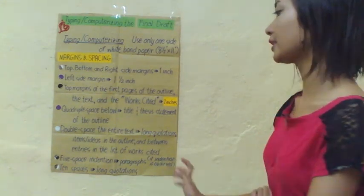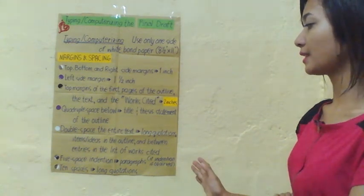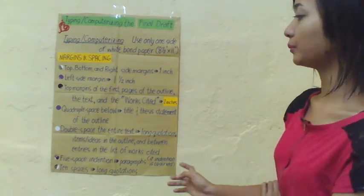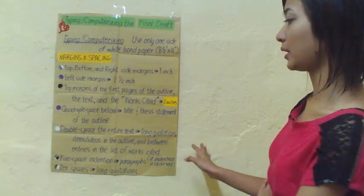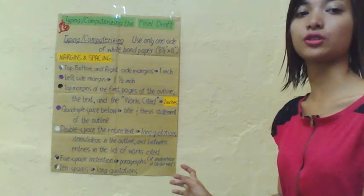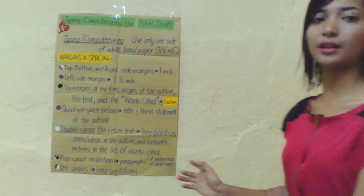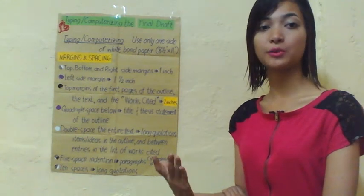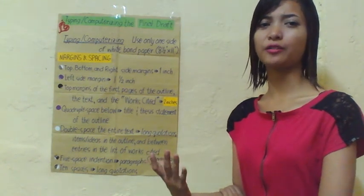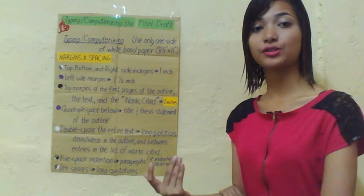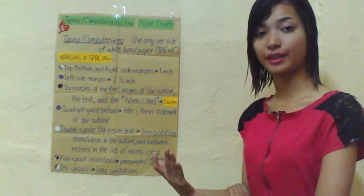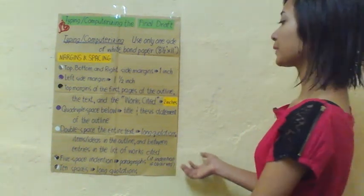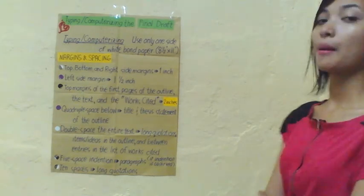Double spacing applies to long quotations, items, and ideas in the outline, and between entries in the list of works cited. We allot double space for the entire text of long quotations — for example, when we use a quotation from a famous writer or personality for the topic we are researching. Also, five-space indentions for paragraphs.